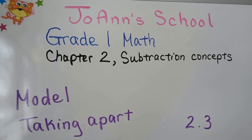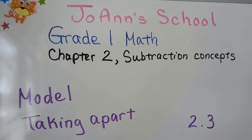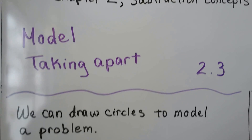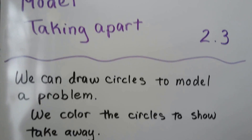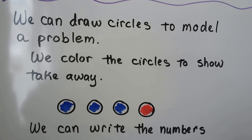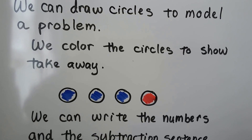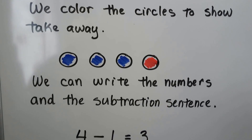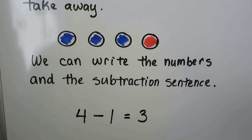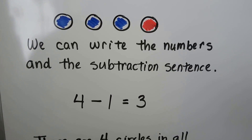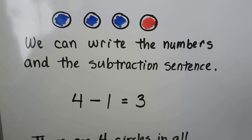Model Taking Apart. Lesson 2.3: We can draw circles to model a problem. We color the circles to show takeaway. We can write the numbers and the subtraction sentence.